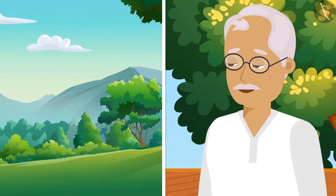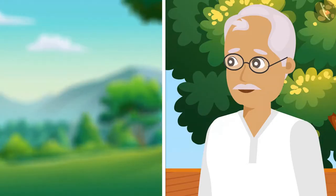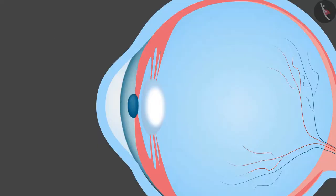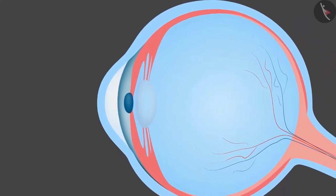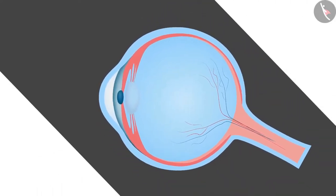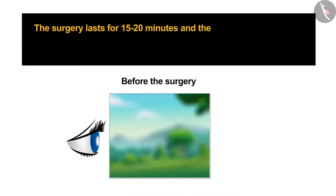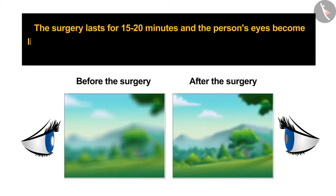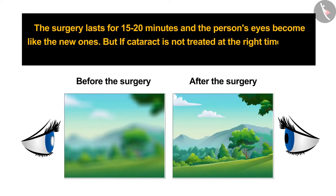The only way to cure this defect is surgery. The doctor replaces the defected lens with another artificial lens. Cataract is a very common disease from which we should not be afraid. The surgery lasts for just 15 to 20 minutes and the person's eyes become like the new one. But if cataract is not treated at the right time, then it can cause permanent blindness to the eyes.